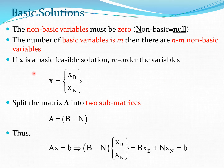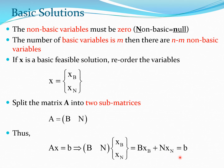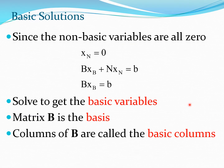We write X as the vector [XB, XN] and split matrix A into two sub-matrices B and N. The constraint set AX equals B can be written as BXB plus NXN equals B. Since the non-basic variables are all 0, substituting XN equals 0 gives BXB equals B.